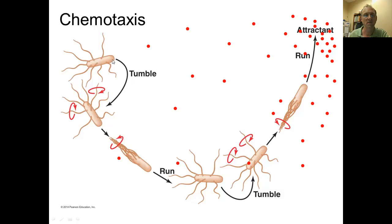The movement of microorganisms is actually rather random. One process is tumbling, in which the flagella on the surface spin in essentially random directions from one another, causing the microorganism to point randomly in different directions. This tumble movement is alternated with running movement, where all the flagella spin in unison, propelling the organism in a single direction. As the organism moves towards a chemoattractant, the number of runs becomes more frequent than the number of tumbles, resulting in gradual movement toward the attractive chemical.